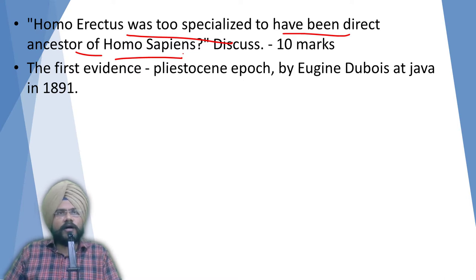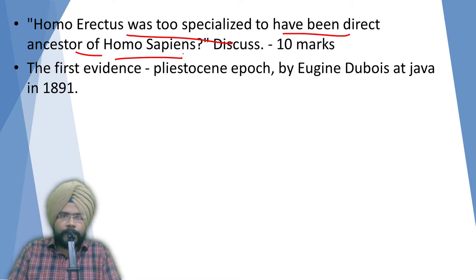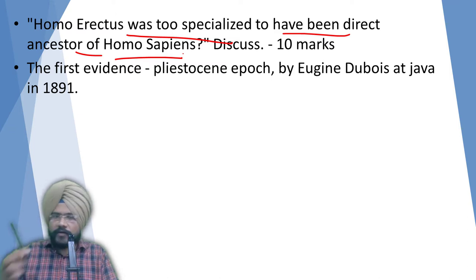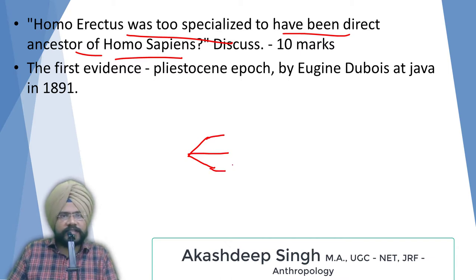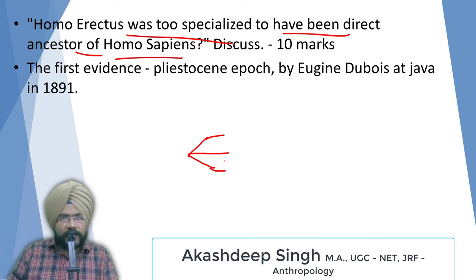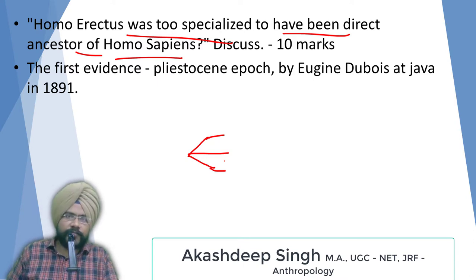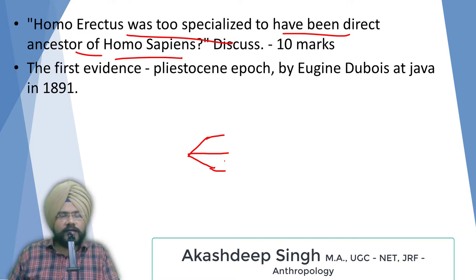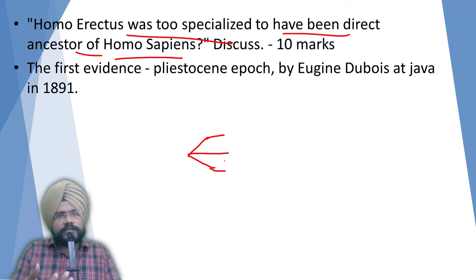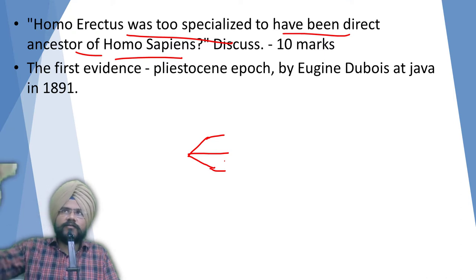First, let's see how evolution works. In evolution, you have a generalized ancestor. Take the case of the finches of the Galapagos Islands - they had a basic, generalized beak adapted to the whole environment rather than a particular environmental niche. Similarly, take the case of Australopithecus.